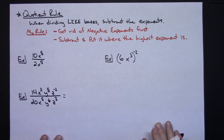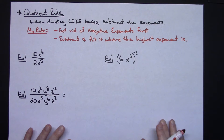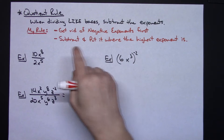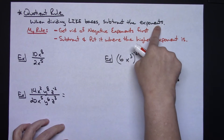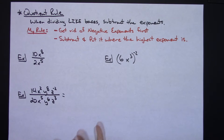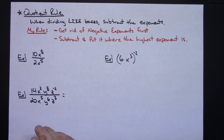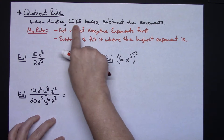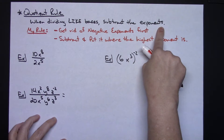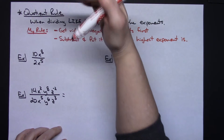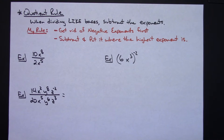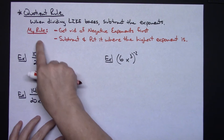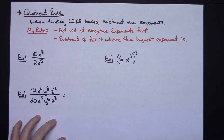Now let's look at the quotient rule. The traditional textbook rule says when dividing like bases, subtract the exponents — perfectly good rule and it works. However, I've revamped it for my students. A lot of times students don't like negative exponents, so we try to get rid of them entirely. Implementing the traditional rule means you always subtract top from bottom, which can give negatives. So I've adjusted this — and this is definitely my method. We get rid of any negative exponents first, then we just subtract normally and put the result where the highest exponent is.